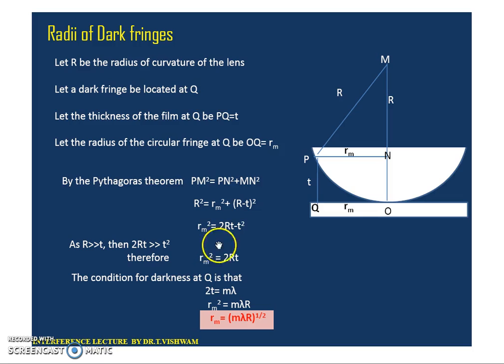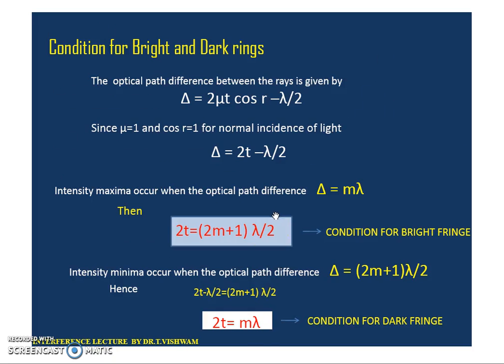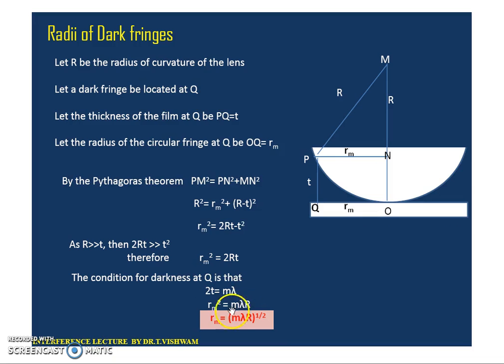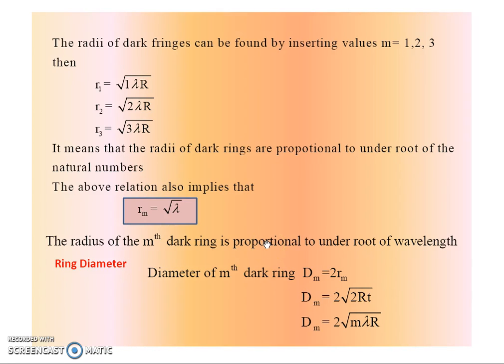From the dark fringe condition, we have 2t = mλ. Substituting, rm² = mλR, so rm = √(mλR), where m is an integer (1, 2, 3...). This means the radius of the dark fringes is proportional to the square root of the natural numbers, and rm is proportional to √λ.